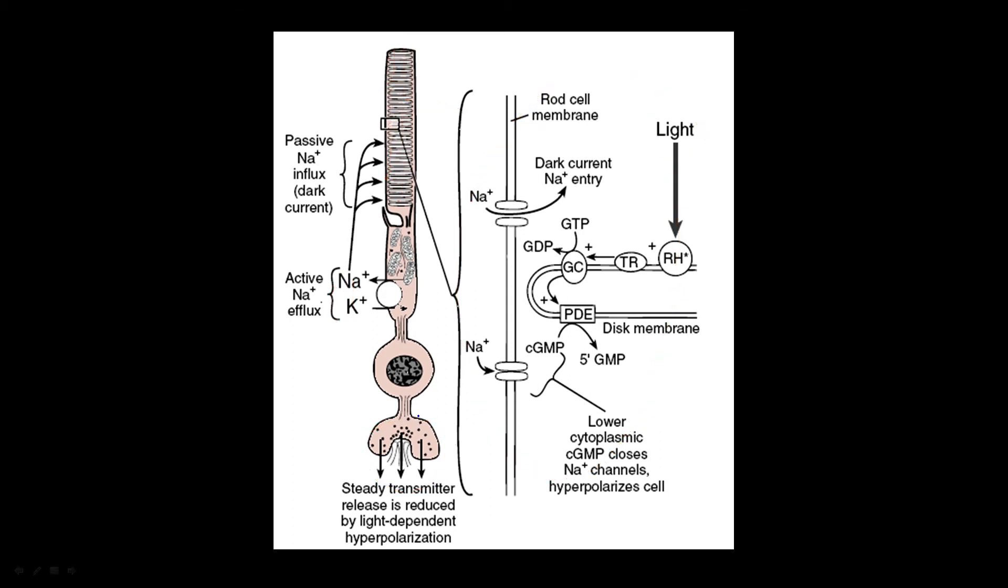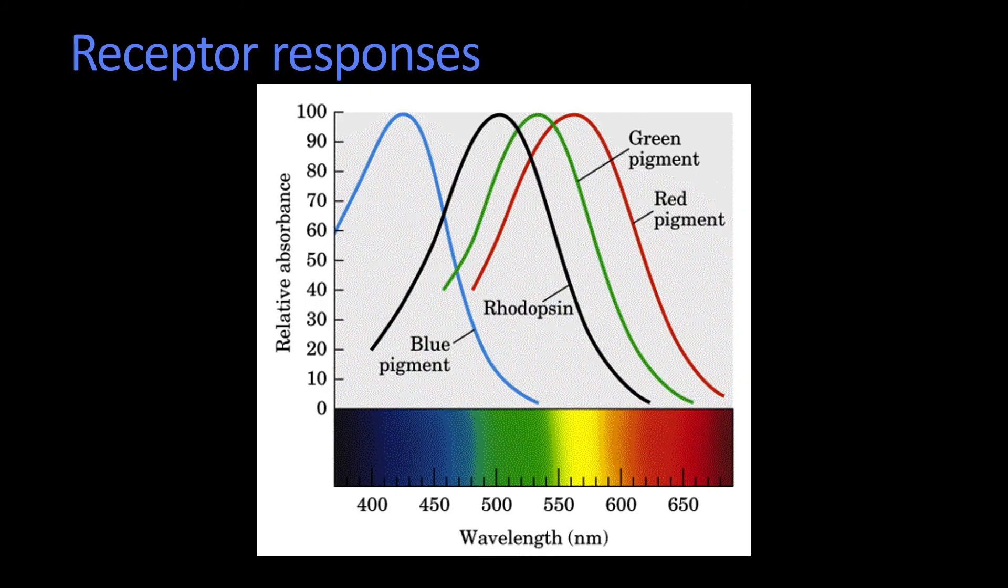Now we said before that each of these photo detectors respond differentially to wavelengths of light. And we showed you short, medium, and long. The one we didn't show you before was the one that includes rhodopsin. So here's the blue or the short pigment, the green and the red, which we've looked at before. And here is what the rod responds to.